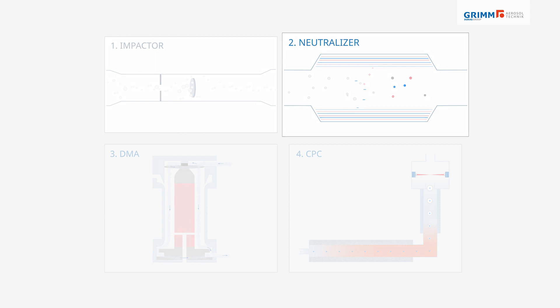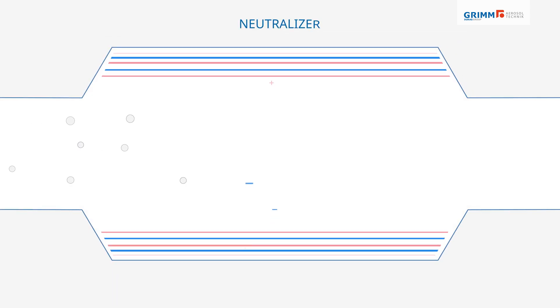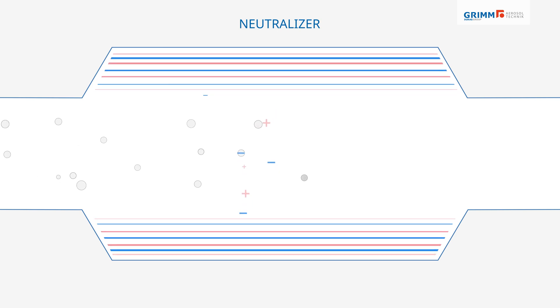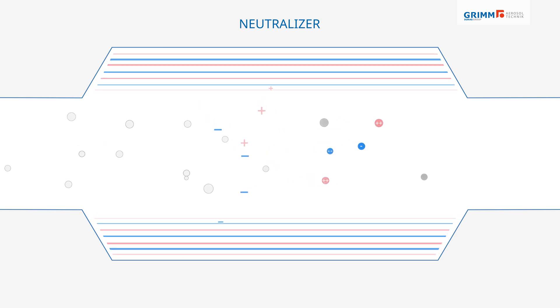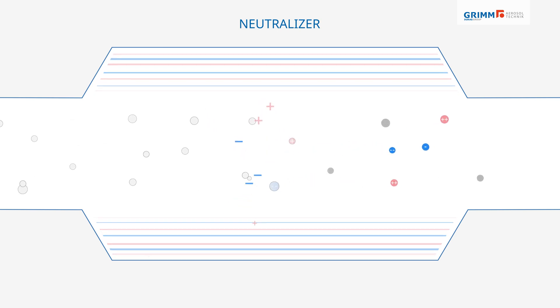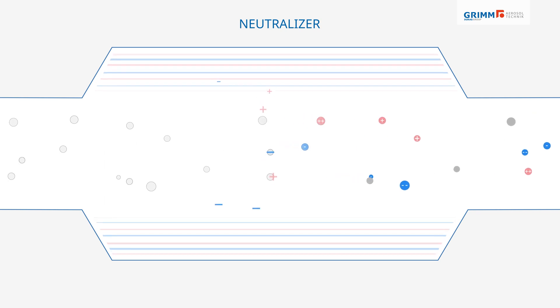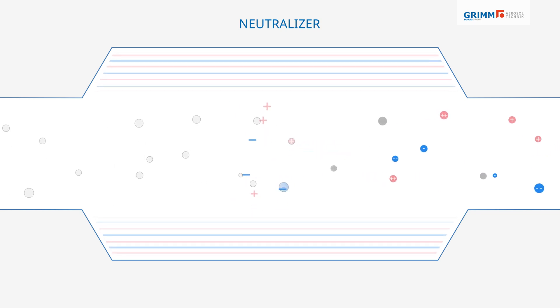The charge conditioner, also called a neutralizer, generates bipolar ions interacting with the particles by diffusion. This establishes a well-defined charging state.